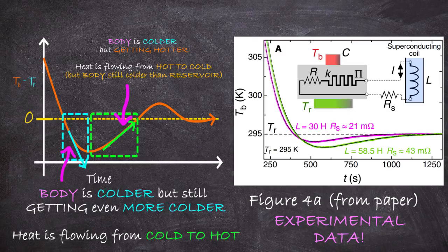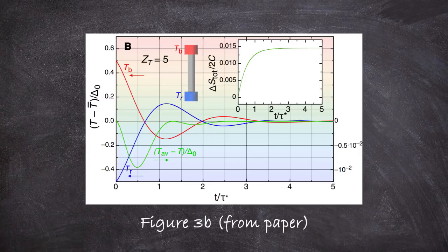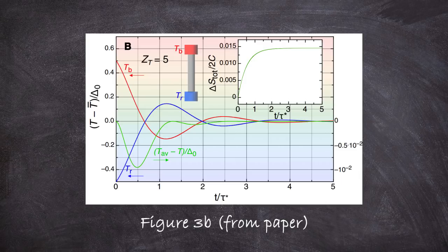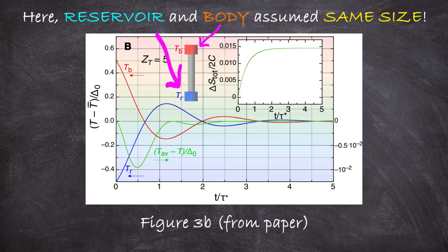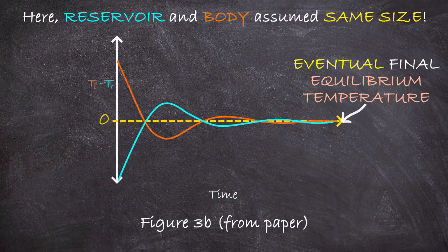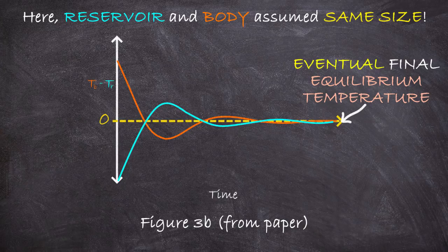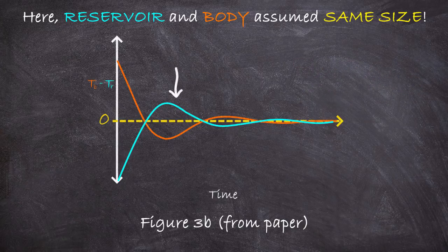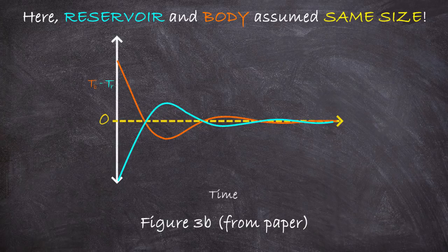Here's another plot from the paper which is a theoretical calculation like before, except rather than considering a reservoir that is very very large, it considers the case where the so-called reservoir is actually of equal size to the body. In this case where both systems are the same size, we can see how their temperature progresses in time here. Looking at this, we can see that although eventually they meet up at a temperature exactly in the middle between their starting temperatures—and it's in the middle because they're identical objects—in the short term, in terms of the dynamics of how they get there, they actually switch off back and forth as to who is really the hotter object.